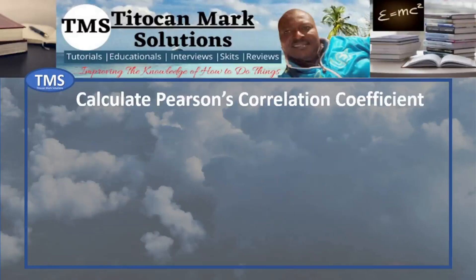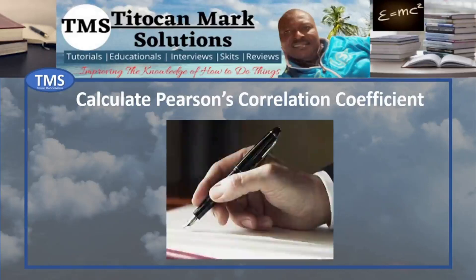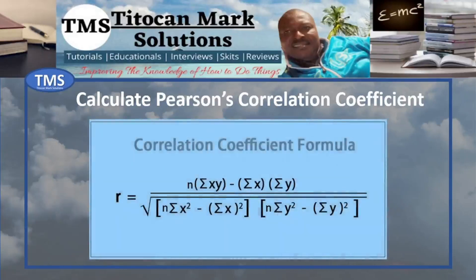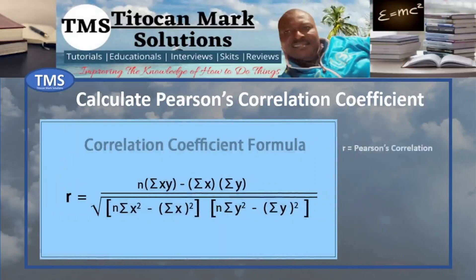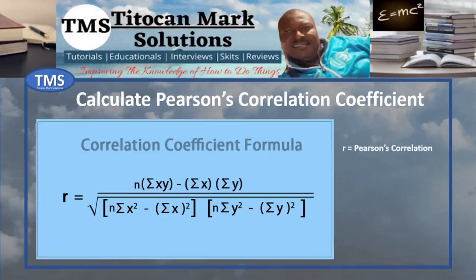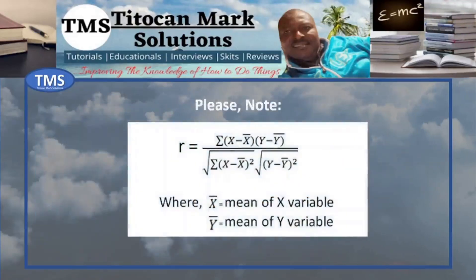The next step is to calculate the Pearson's Correlation Coefficient, and you can do this either by hand or by use of software. If you wish to calculate the correlation by hand, this is the best formula to use, where r is the Pearson's Correlation, N is the number of observations or size of data, and X and Y are your variables. Please note that some authors also use an alternate formula to calculate the correlation coefficient and get the same results.